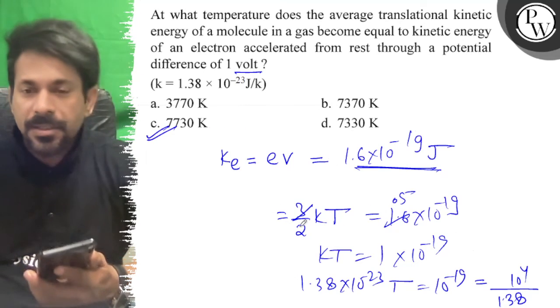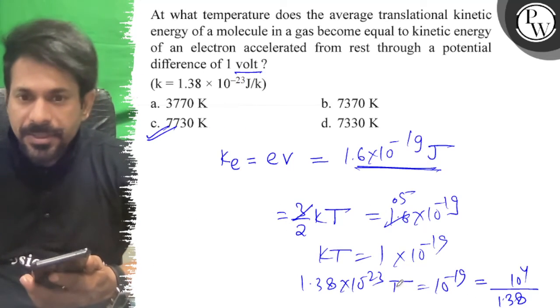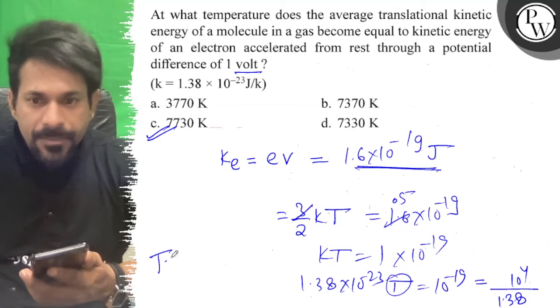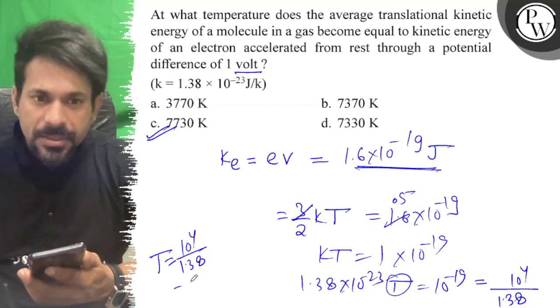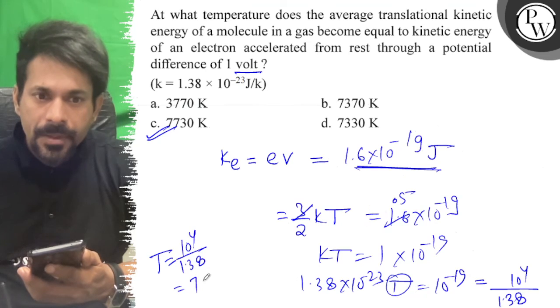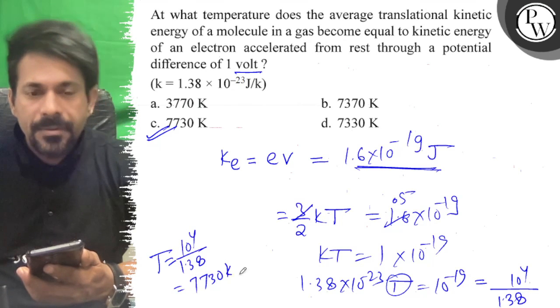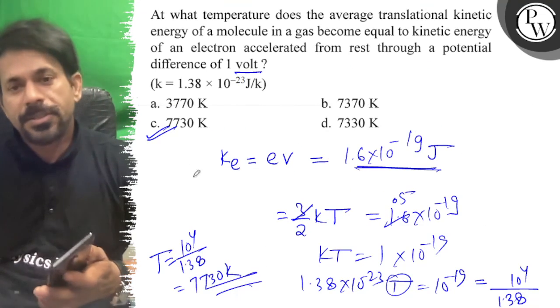So here is your answer C. The value here is T, so T value is 10 to the 4 upon 1.38, which I can write as 7730. So the right answer of the question is C. All the best.